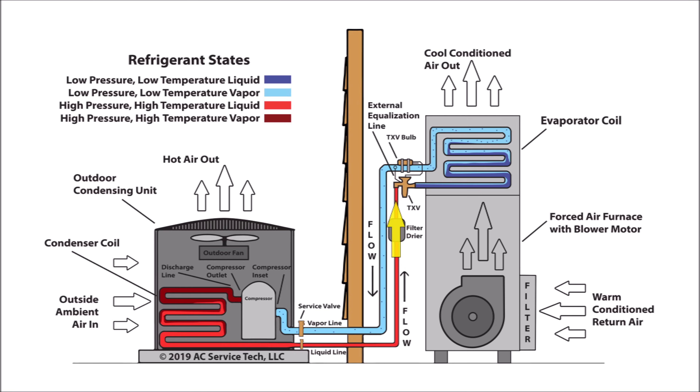The high pressure, high temperature liquid refrigerant then continues over to the metering device. In this case, it's a thermostatic expansion valve, which is also referred to as a TXV or TEV. At the TXV, you have high pressure, high temperature liquid refrigerant entering in, and then you have a low pressure, low temperature liquid exiting the TXV.